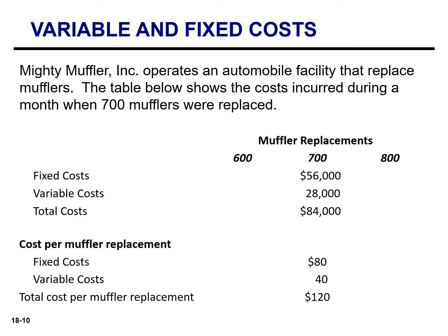Let's look at Mighty Muffler to illustrate fixed and variable costs both in total and on a per unit basis. We have data for 700 mufflers being replaced during the month. Fixed costs are $56,000 at this level of activity. Variable costs at 700 mufflers are $28,000 — calculated by multiplying 700 by the variable cost per unit. Adding fixed and variable costs gives a total cost of $84,000. Fixed cost per unit is obtained by dividing $56,000 by 700. The variable cost per unit remains the same at $40.